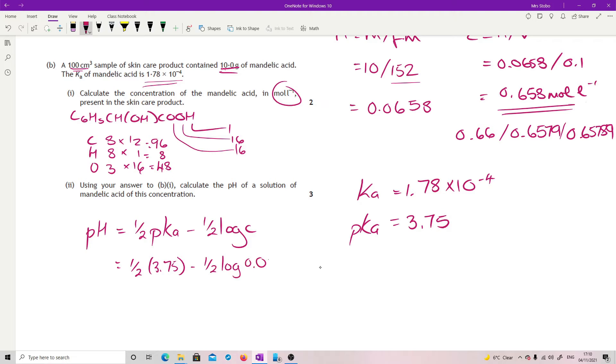Oh, sorry, not 0.0, 0.6658. That's going to give me 1.875 minus minus 0.0909. And overall, that's going to give me 1.97 as my pH.